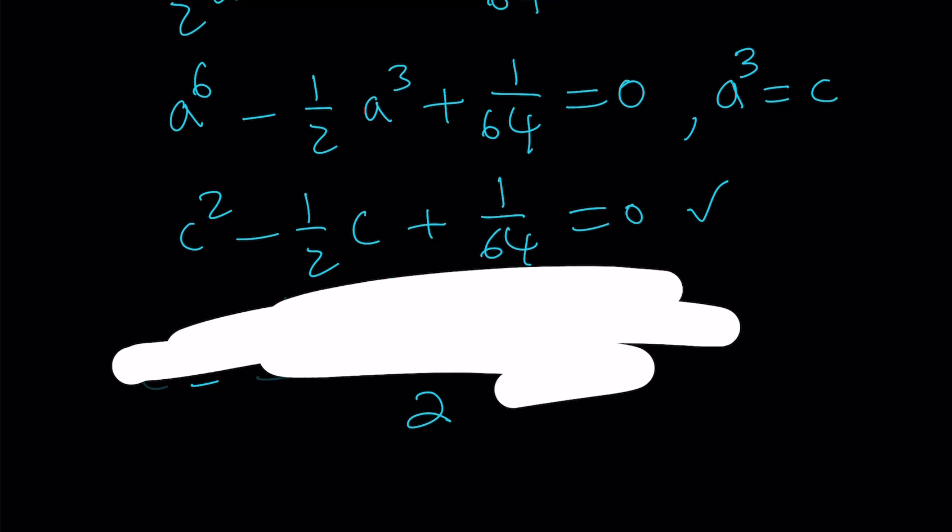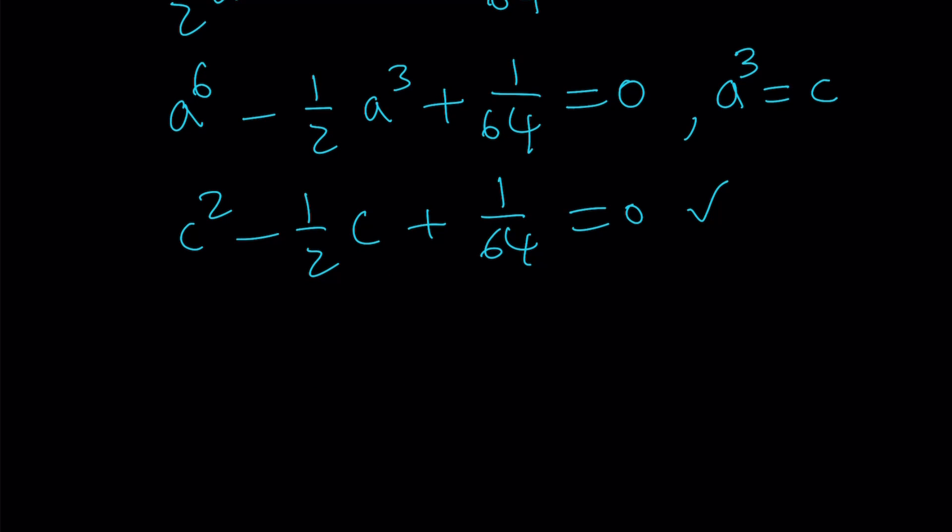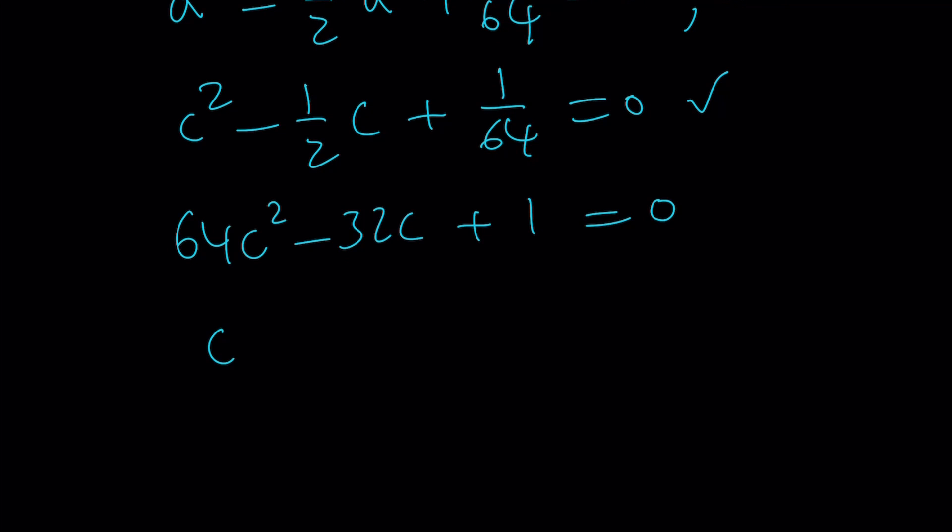So let's go ahead and do that. Multiply everything by 64, get rid of all the fractions. Who likes fractions, right? Okay. So now let's go ahead and use the quadratic formula. Negative b plus minus the square root of b squared minus 4ac.